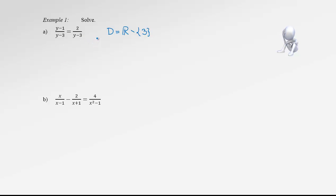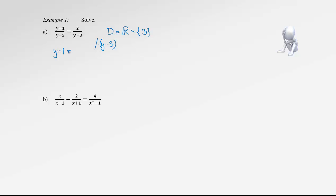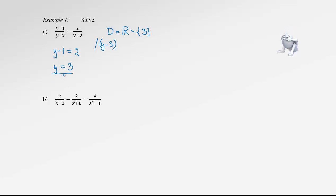Our next step is to multiply by the LCD, which in this case is just y minus 3. If we multiply the first fraction by the denominator, the denominator is reduced, leaving y minus 1. On the other side, the denominator is also reduced, leaving just 2. It's a very simple equation. When we solve it for y, we get 2 plus 1, which is actually 3.